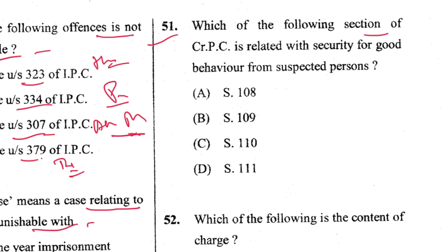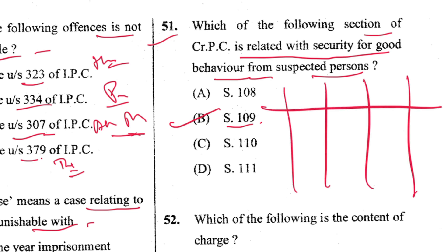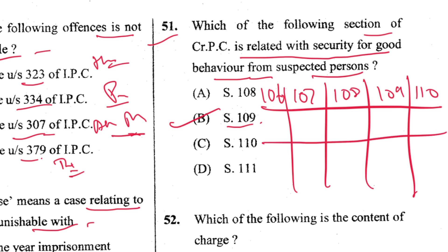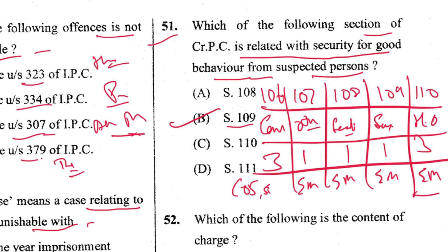Question 51: Which section of CrPC relates to security for good behaviour from suspected persons? That is Section 109. B is the answer. Key chart: Section 106 — on conviction; 107 — other cases; 108 — seditious; 109 — suspected persons; 110 — habitual offenders. Maximum security period and competent authorities vary — always write this chart on your rough page in the exam.